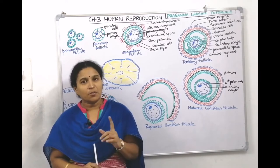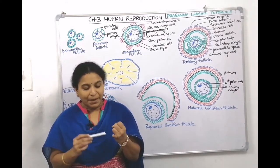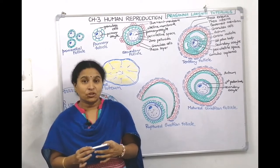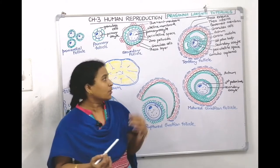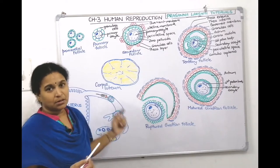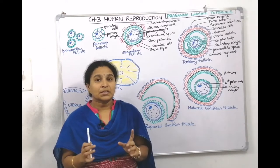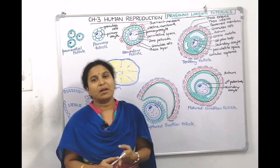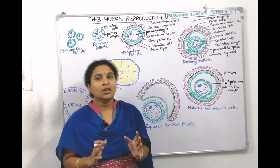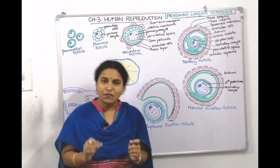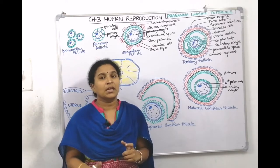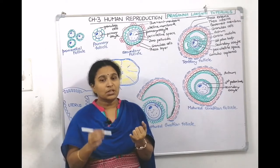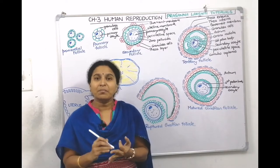In the previous lecture we were talking about oogenesis — primordial follicle, primary follicle, secondary follicle, tertiary follicle, then matured Graafian follicle, then ruptured follicle. Oogenesis is the process of development of ova or oocyte, the matured female gamete. In females, oogenesis starts before birth, from the fourth week of embryonic life. The three stages are: multiplication phase, growth phase, and maturation phase.